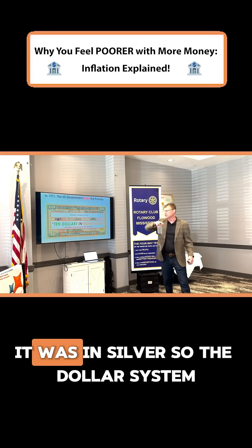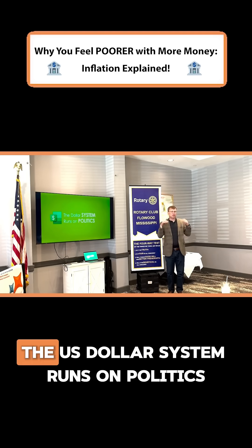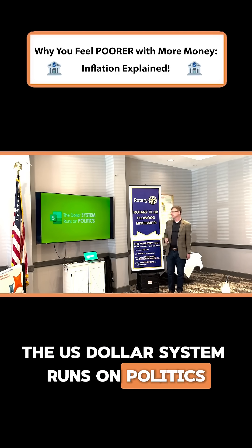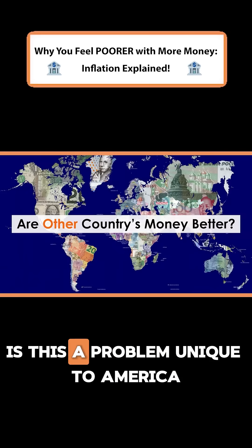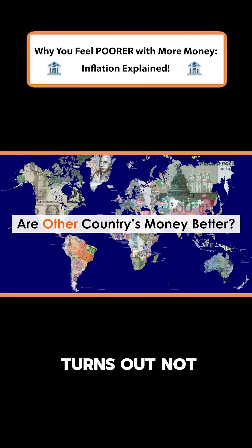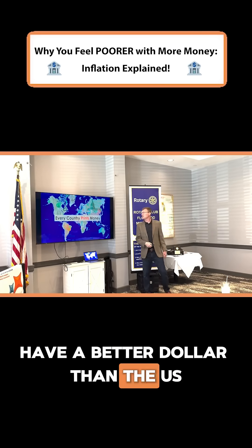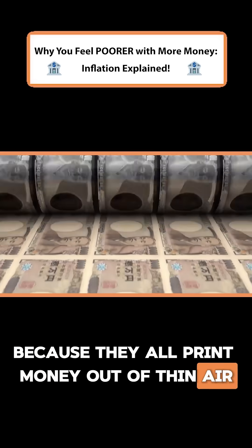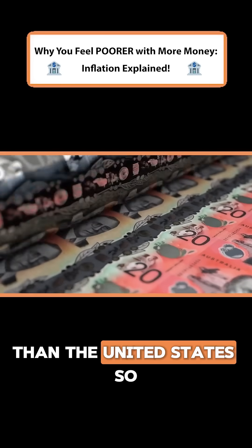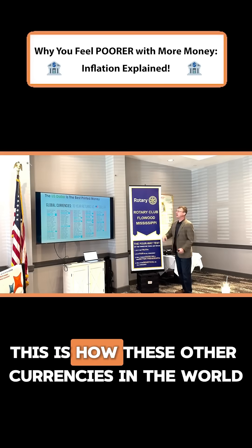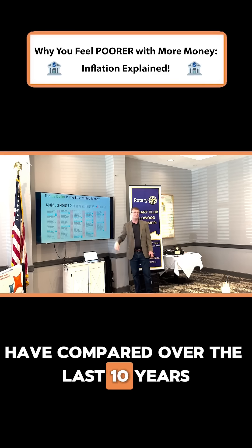In the case of a $1 bill, that was in silver. So the dollar system — the US dollar system — runs on politics. What about different governments? Is this a problem unique to America? It turns out not. None of these countries have a better currency than the US, because they all print money out of thin air. And believe it or not, they're actually less responsible than the United States. So this is how these other currencies in the world have compared over the last 10 years to the US dollar.